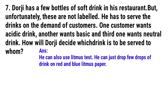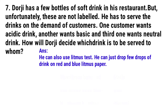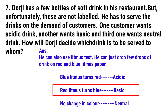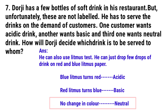He can use the litmus test. He can drop a few drops of the drink on red or blue litmus paper. If blue litmus turns red, the drink is acidic. If red litmus turns blue, the drink is basic. If there is no change in color, the drink is neutral.